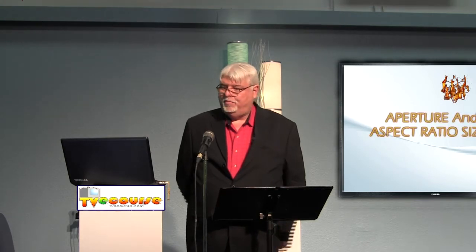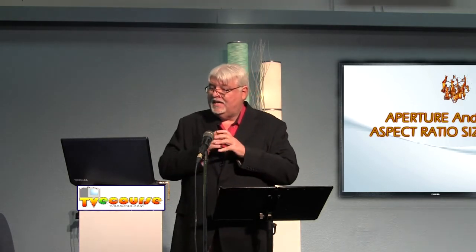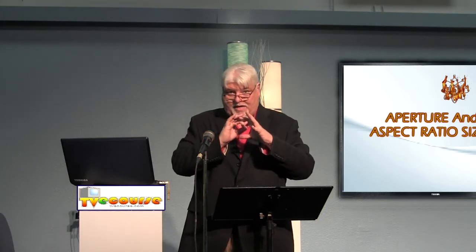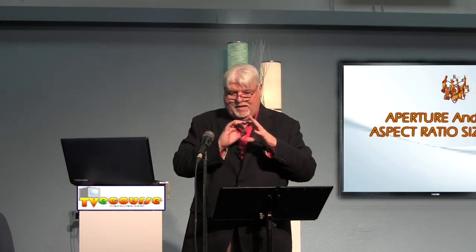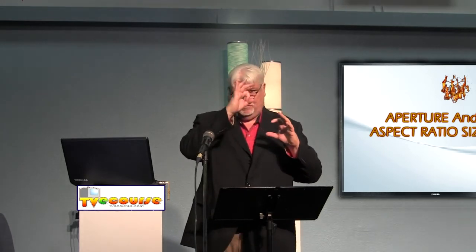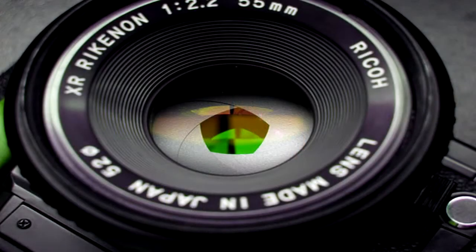Let's talk about aperture. Aperture is the diameter of an opening inside the lens that controls the amount of light reaching the sensor in the camera, or the film in an actual film camera. Basically you have a lens and there's a little bitty opening in the middle of it and it can be wider or smaller — and that is the aperture. The aperture is a mechanical way of controlling the amount of light hitting the sensor in a camera.